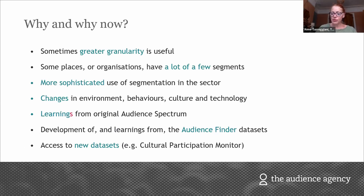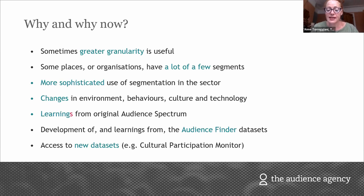So, new Audience Spectrum. Just to remind everybody: Audience Spectrum is a segmentation of the UK population based on their cultural habits, and importantly it's geo-locatable — we can see in which postcodes people with tendencies toward different kinds of culture actually live. There are 10 segments altogether, and we originally built the first version of Audience Spectrum around eight or nine years ago.